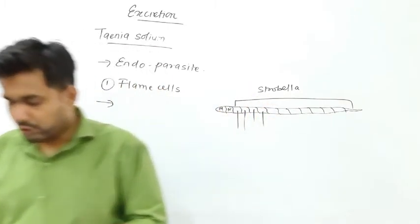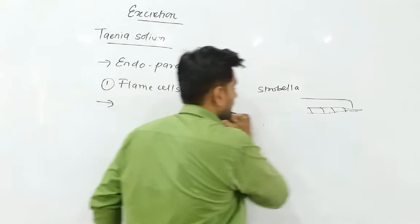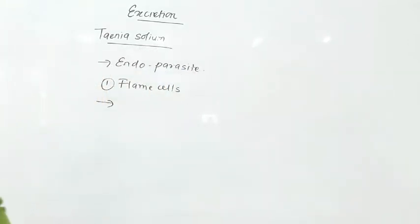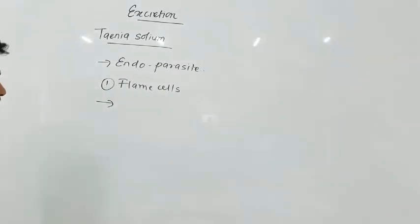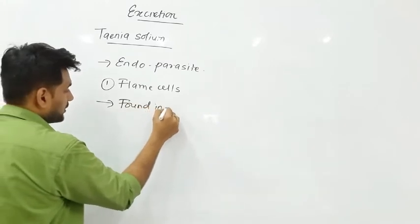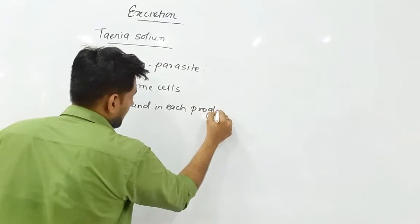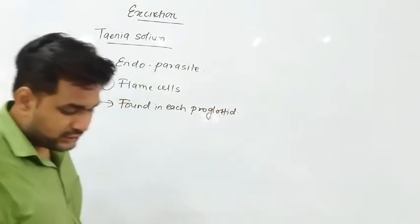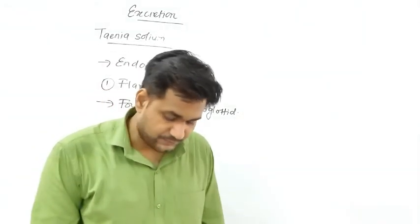Each single segment is called a proglottid. Flame cells are found in each proglottid — they are present in every proglottid of the strobella. Flame cells are found in large numbers in each proglottid.